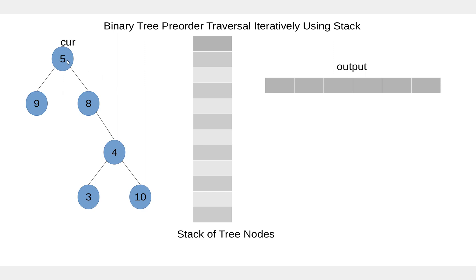Initially, the current node points to node 5, which is not null, so we add 5 to the output — we are processing the node — and then add that node to the stack and move to its left child. Now node 9 is not null, so we process that node, add it to the output, add the node to the stack, and move to its left child.